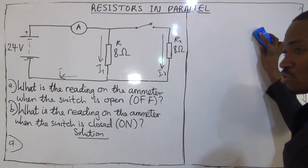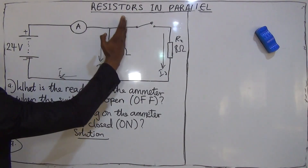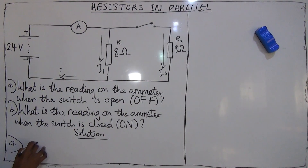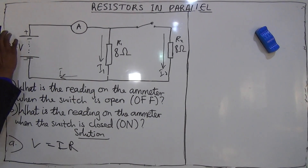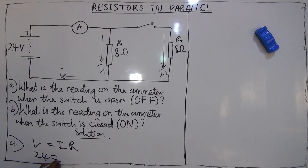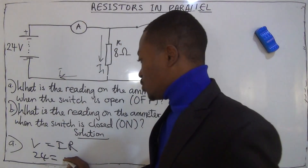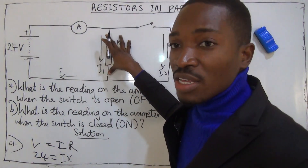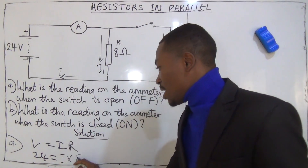Ignoring the isolated part of the circuit and focusing on the active part, we use V equals IR. The voltage is 24 volts, so we have 24 equals I multiplied by R. R is the only resistance in the circuit, which is 8 ohms. So: 24 equals I multiplied by 8.